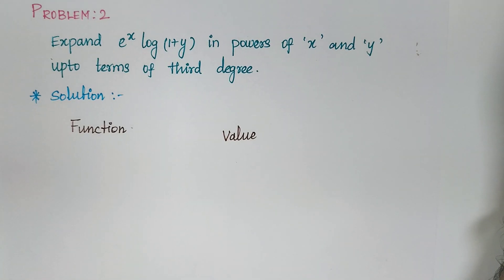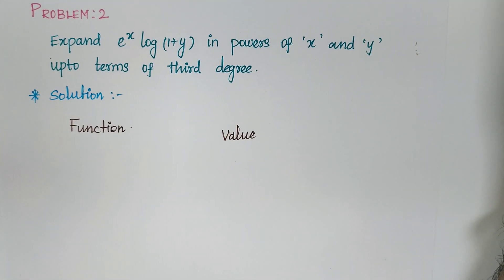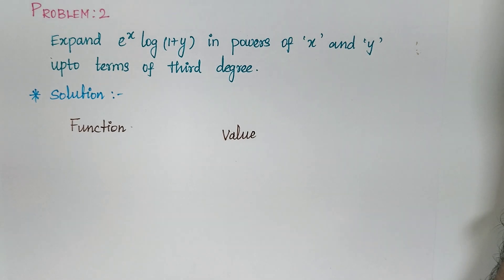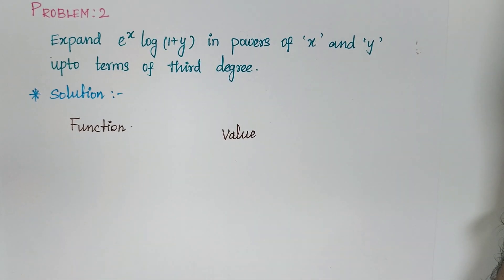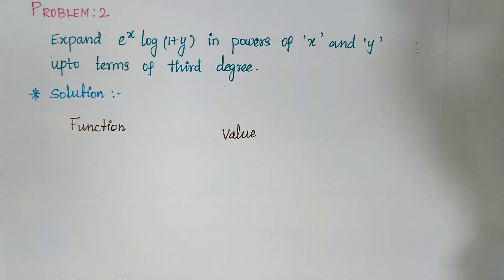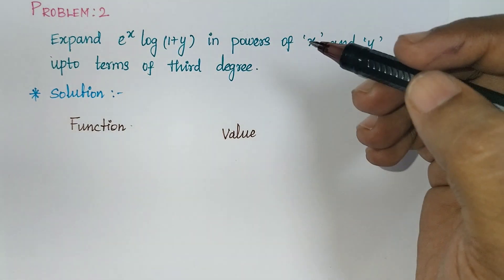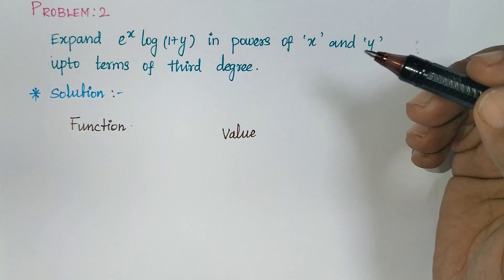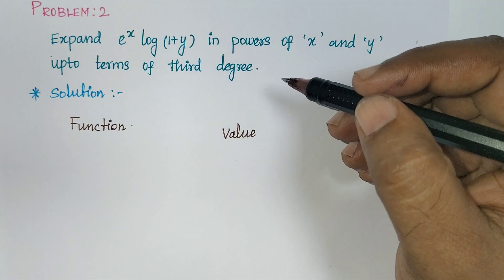Welcome to Carrier Gradience Max playlist. In this video, I am going to continue Taylor series based on problems. In the previous video, I solved one problem — the e^x cos(y) model — where they gave the point directly as (0, π/2).